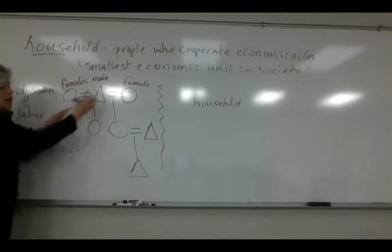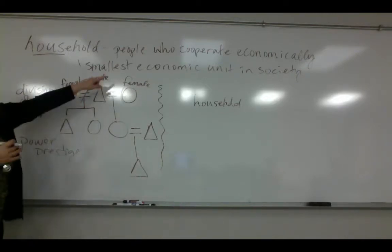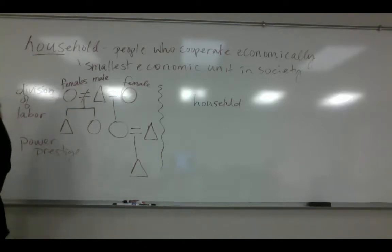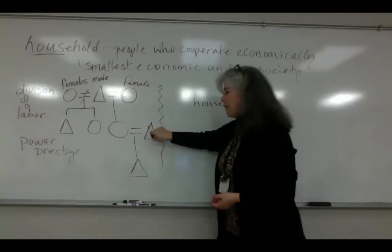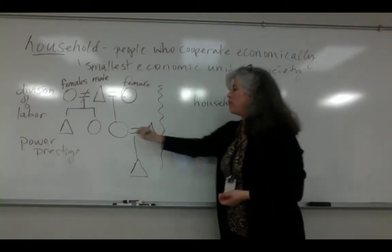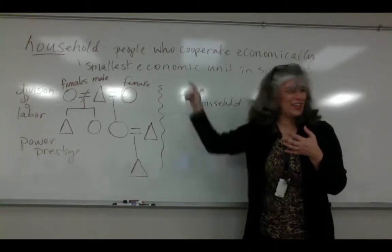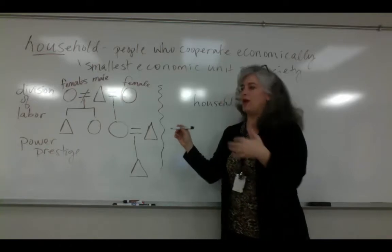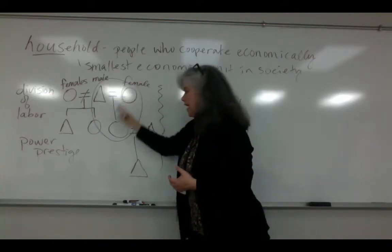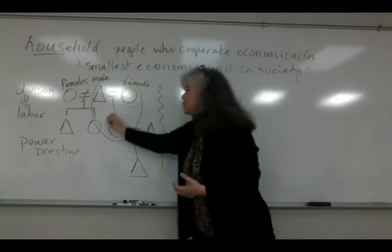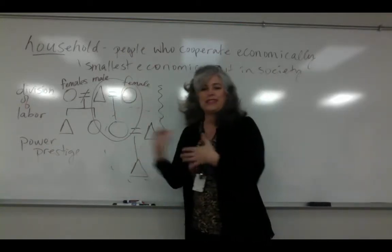When a divorce happens, these four people are no longer living in the same household. Maybe there is shared custody, child support, or alimony — these are ways economic cooperation still occurs following a different custom. Customarily in the US, the children would live in a different household independently of the other parent, though shared custody arrangements exist.